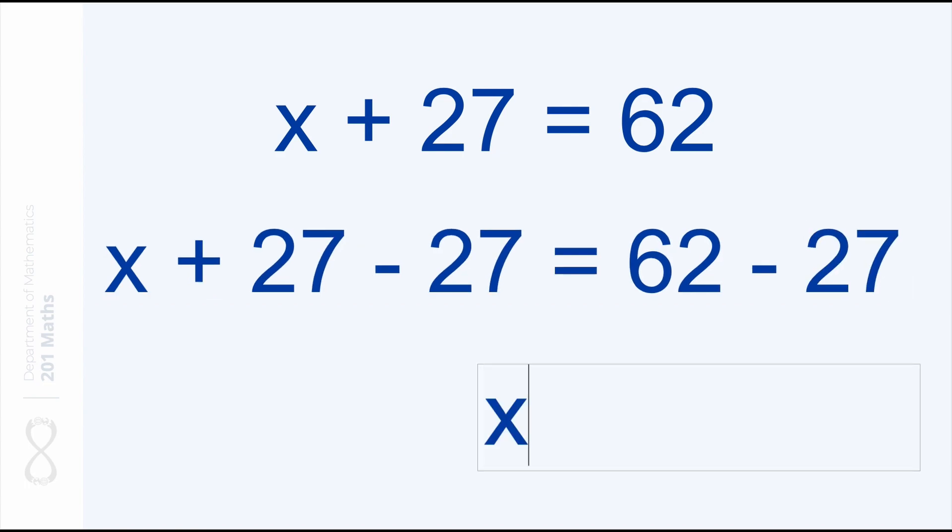On the left side we are left just with x, and on the right side we do the operation 62 minus 27 which gives us 35. And now we have solved for x. The value of x is 35. We can use the exact same approach if we have x minus something.